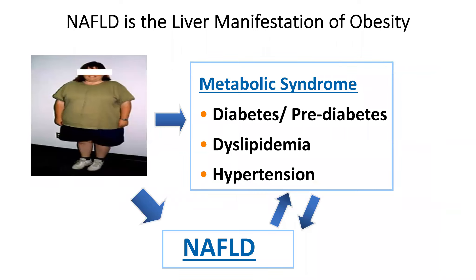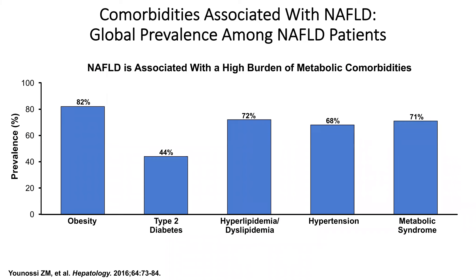NAFLD is present in patients who do not consume a large amount of alcohol. It's considered the liver manifestation of obesity, but also of metabolic syndrome, which includes diabetes, prediabetes, dyslipidemia, and high blood pressure. NAFLD is associated with comorbidities: obesity in 80% of cases, type 2 diabetes in 45%, dyslipidemia, hypertension, and metabolic syndrome in about two-thirds of patients. Sometimes patients are not yet diagnosed with these conditions when they come to see us, so it's very important to screen for them.